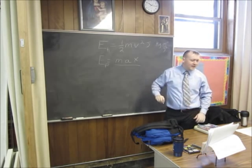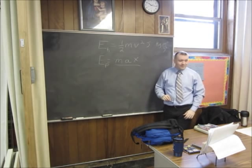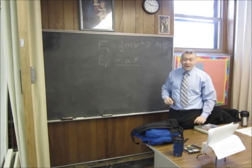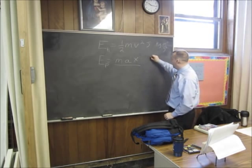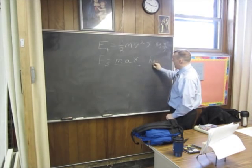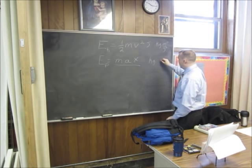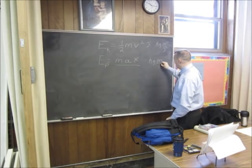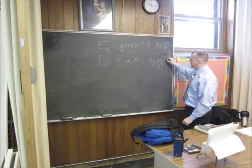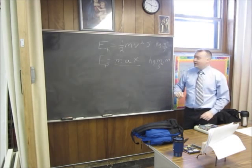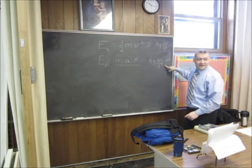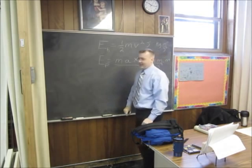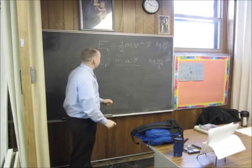A is an acceleration. What are the units of acceleration? Meters per second squared. Meters over second squared. So we have kilograms from the M, and we have meters from the A over second squared times meters, right? Is that the same as this? So max has the same units as half MV squared.